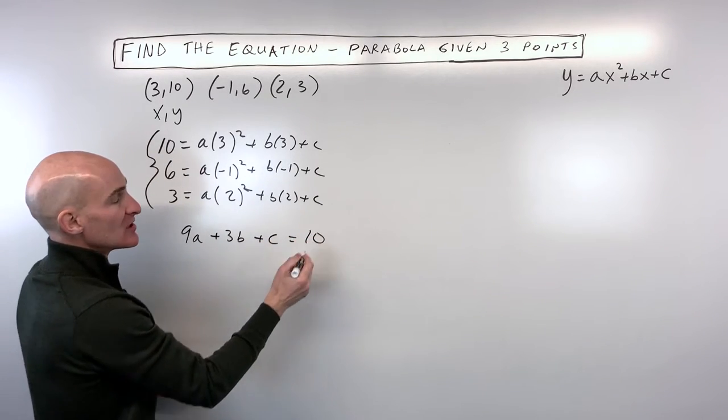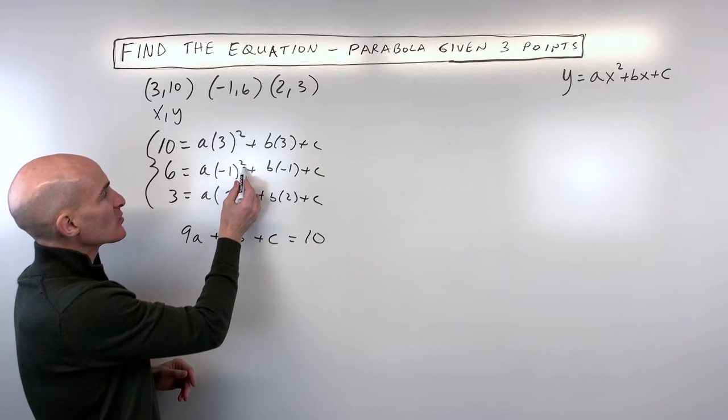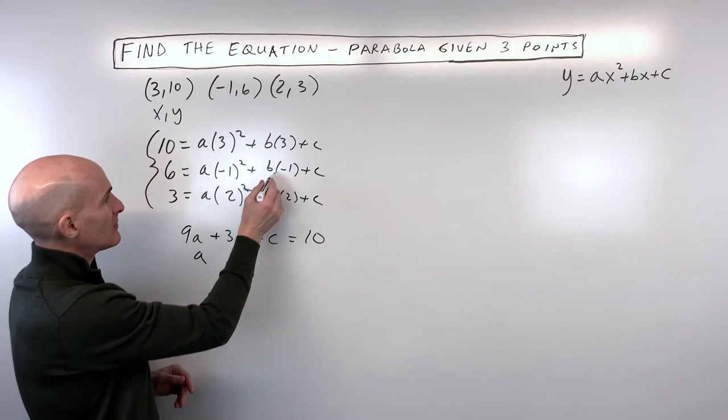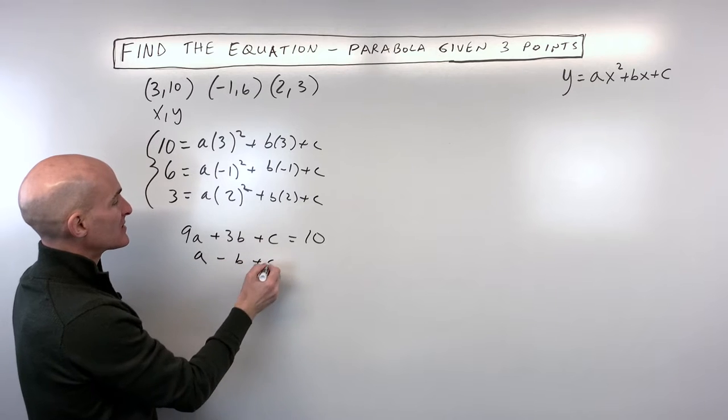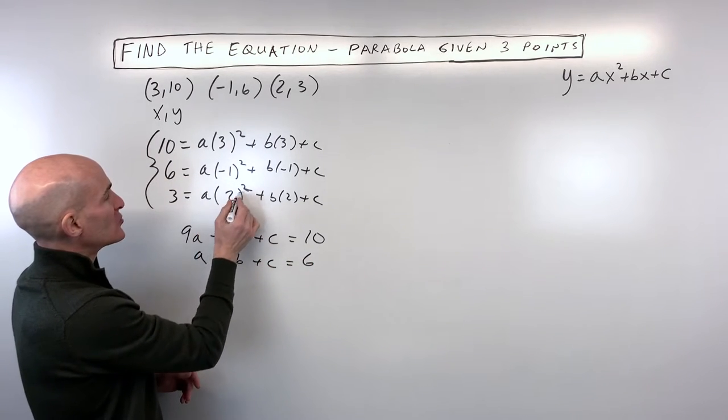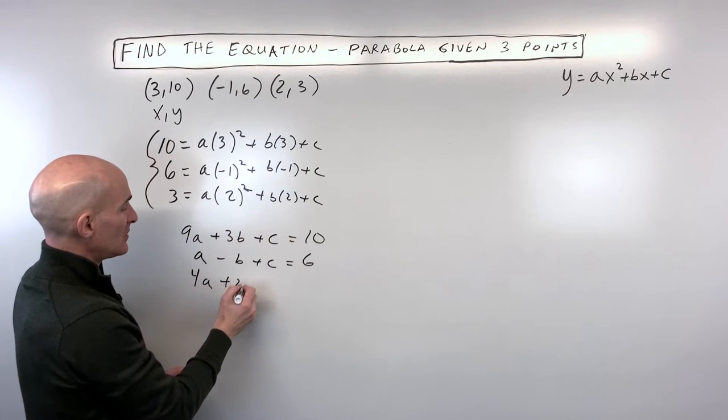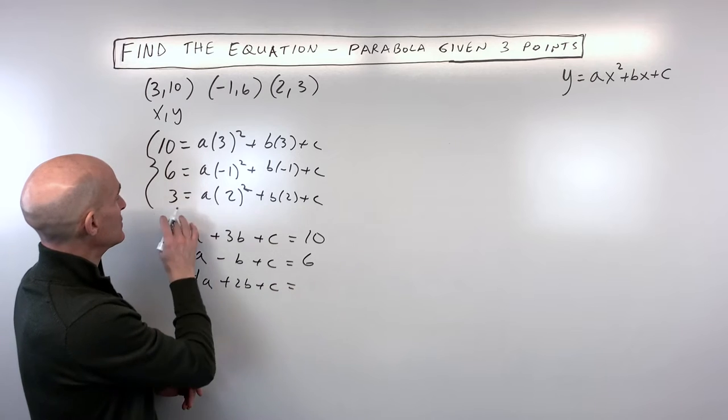3 times b gives us 3b plus c is equal to 10. Negative 1 squared is 1 times a is a minus b plus c is equal to 6. And in our third equation we have 2 squared is 4 times a plus 2b plus c is equal to 3.